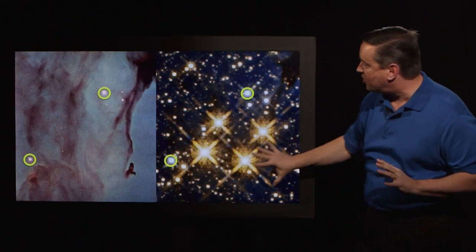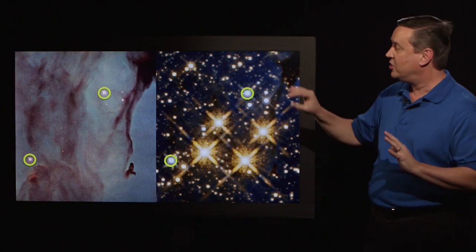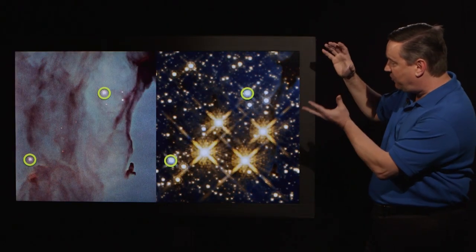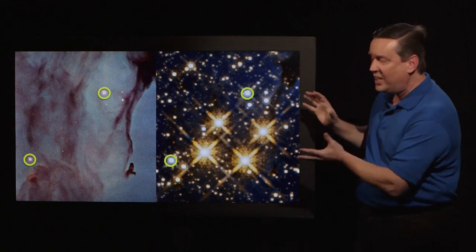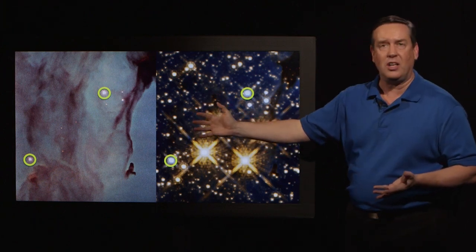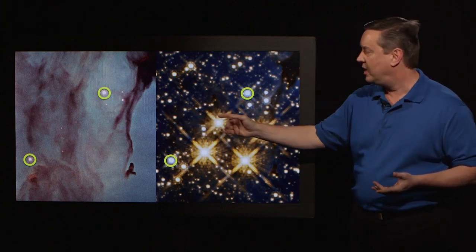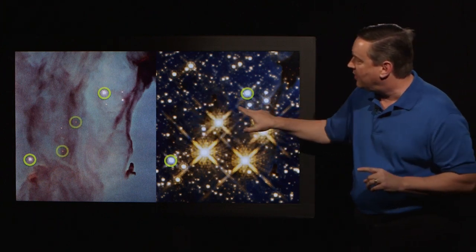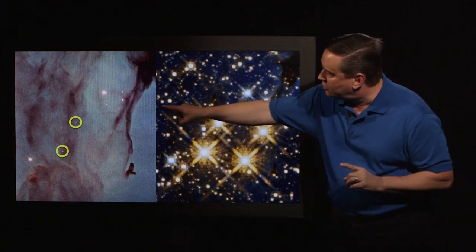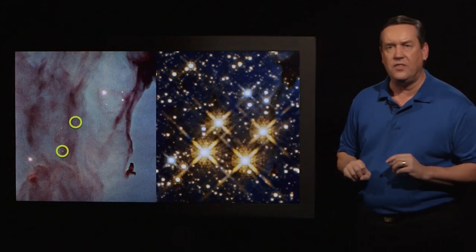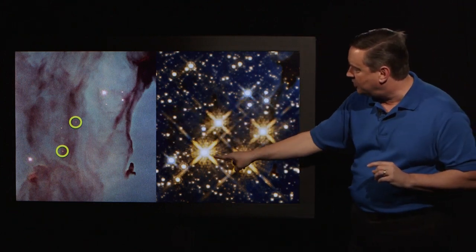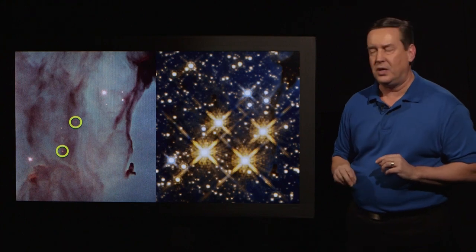Almost all the other stars don't appear in the visible light image. And in particular, you've got these four really bright stars in the infrared that are hardly visible at all. When I went very carefully through it, those two very faint stars in the visible light image are the left two stars here in the infrared image, whereas these ones don't appear at all in the visible light image.